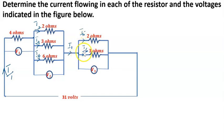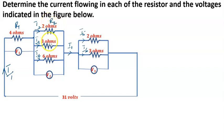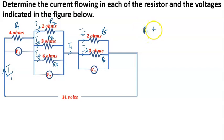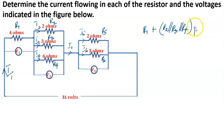Remember our lesson on resistors in parallel and series: when resistors are in series, the same current flows through them but they have different voltages. Now let's rename the resistors: r1, r2, r3, r4, r5, and r6. R1 is in series with the whole of r2, r3, and r4 which are in parallel with each other. That whole combination is in series with the combination of r5 in parallel with r6.